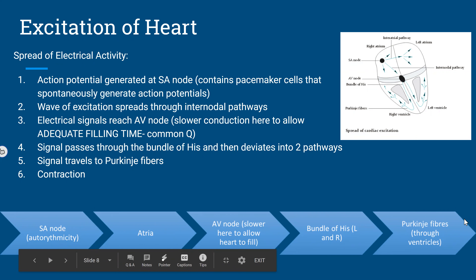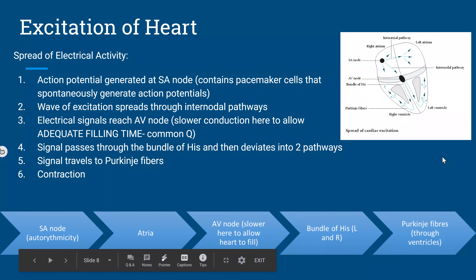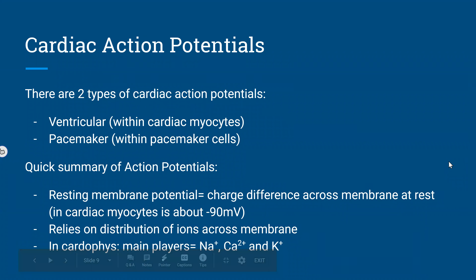Excitation of the heart is important to know. An action potential is generated at the SA node via pacemaker cells. That wave of excitation spreads through the internodal pathways to the AV node, where there is slower conduction — this allows for adequate filling time, which is a common exam question. It then goes to the bundle of His and the Purkinje fibers for contraction. There are two types of cardiac action potentials: ventricular and pacemaker.